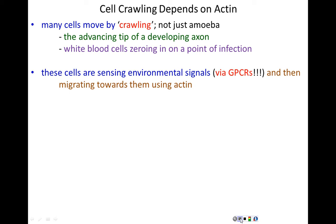In all of these cases — whether it's a white blood cell, a growth cone of an axon, or an amoeba — the cells are crawling towards something. They're not moving randomly. They have been triggered to move and are moving towards a signal. These cells are sensing an environmental signal — a signaling molecule released from a particular location — and they are following that signal to some destination.